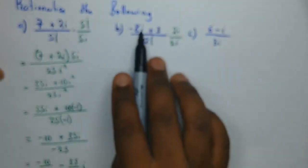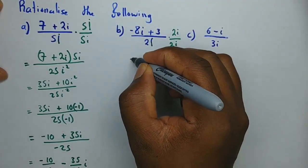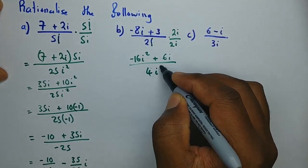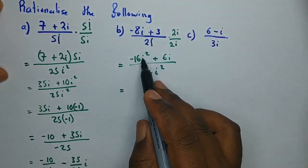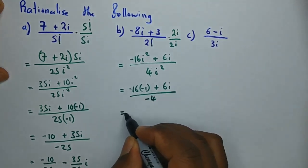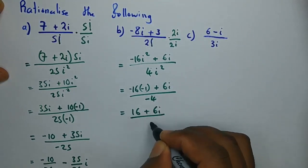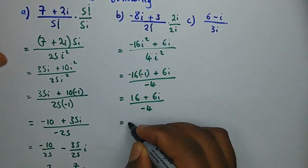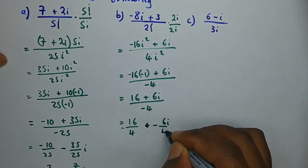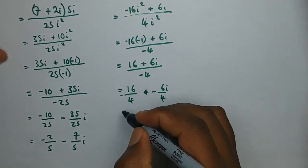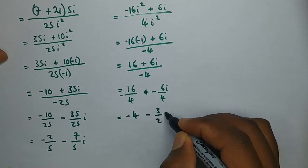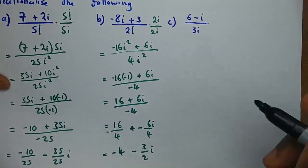For the next example, we multiply both numerator and denominator by 2i. We get negative 8i times 2i giving negative 16i², plus 3 times 2i giving 6i, divided by 4i². Since i² is negative one, we have negative 16 times negative one plus 6i over negative 4, which gives 16 plus 6i over negative 4. Splitting: 16 over negative 4 plus 6i over 4, which reduces to negative 4 minus 3 over 2 i.